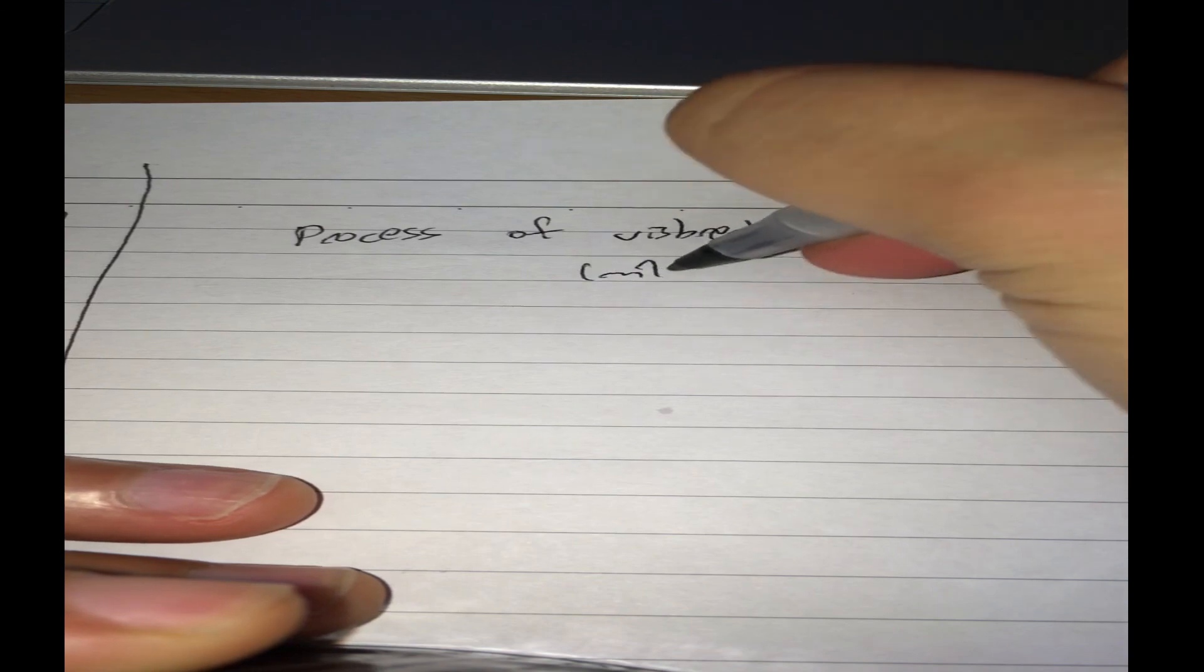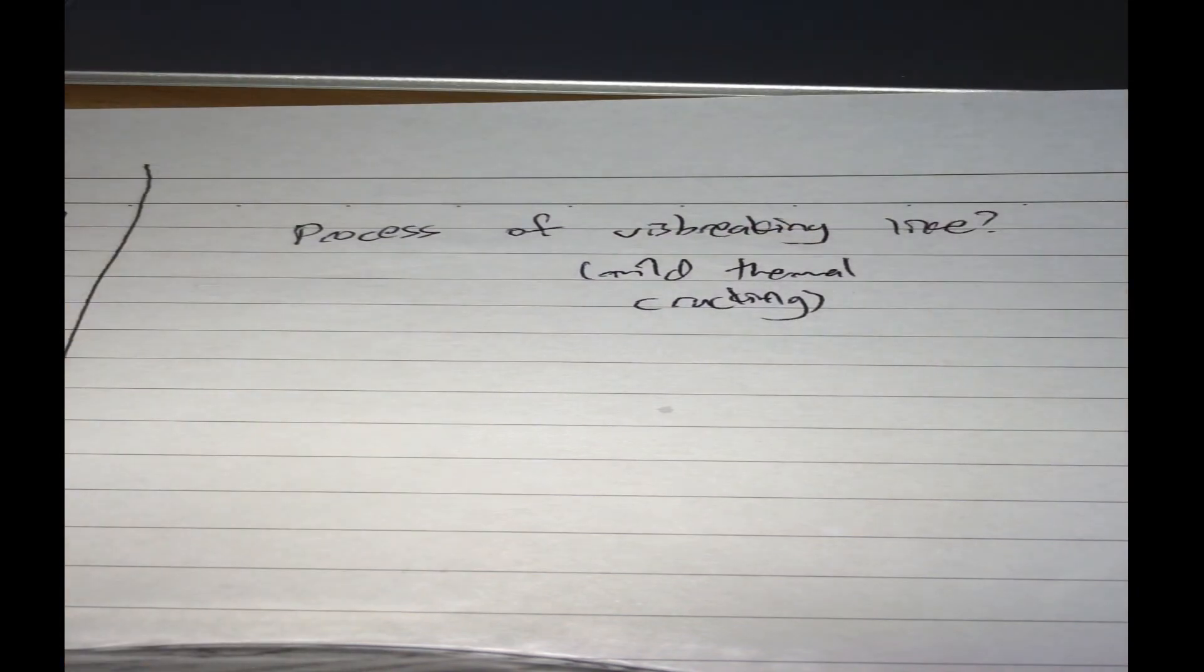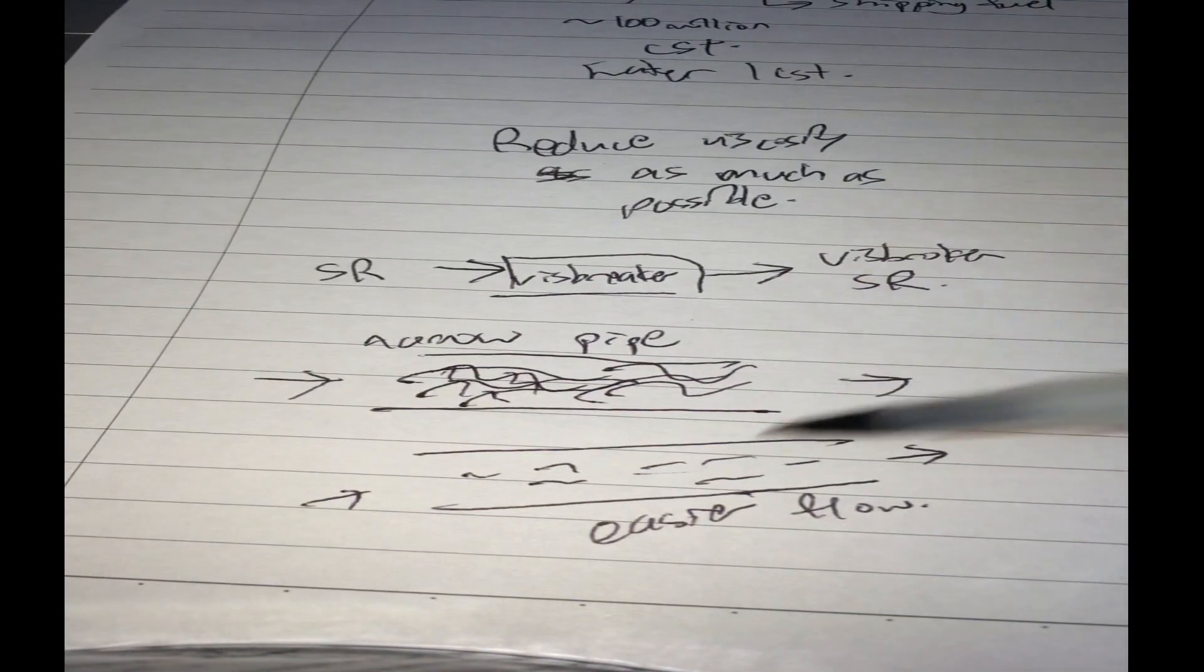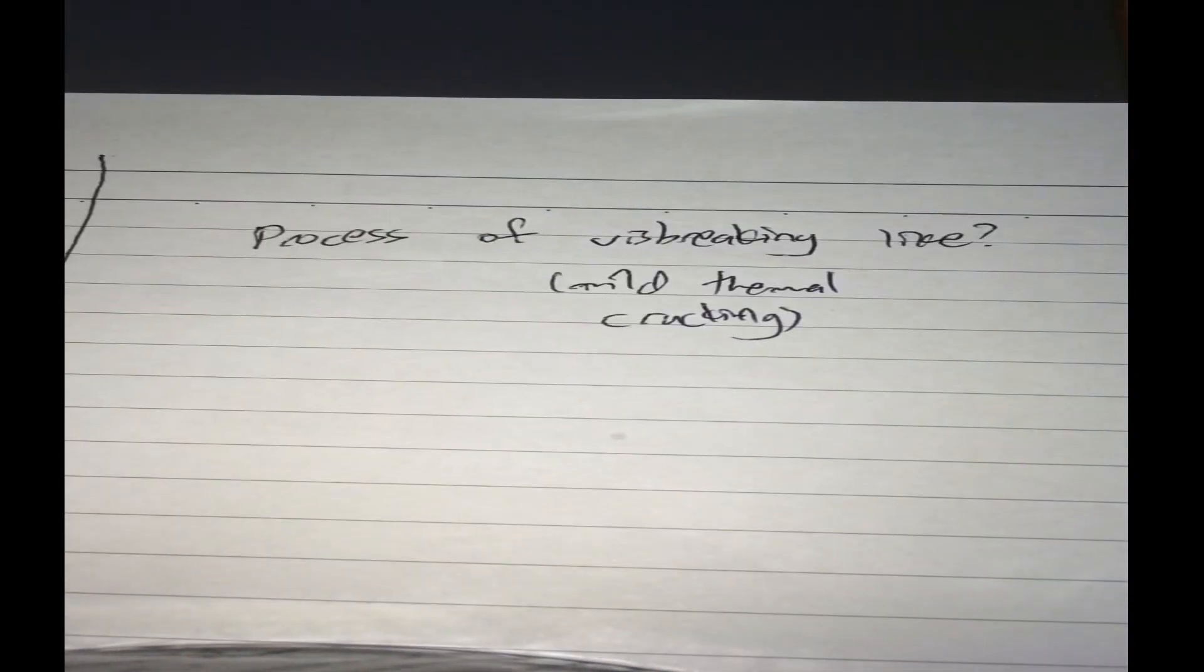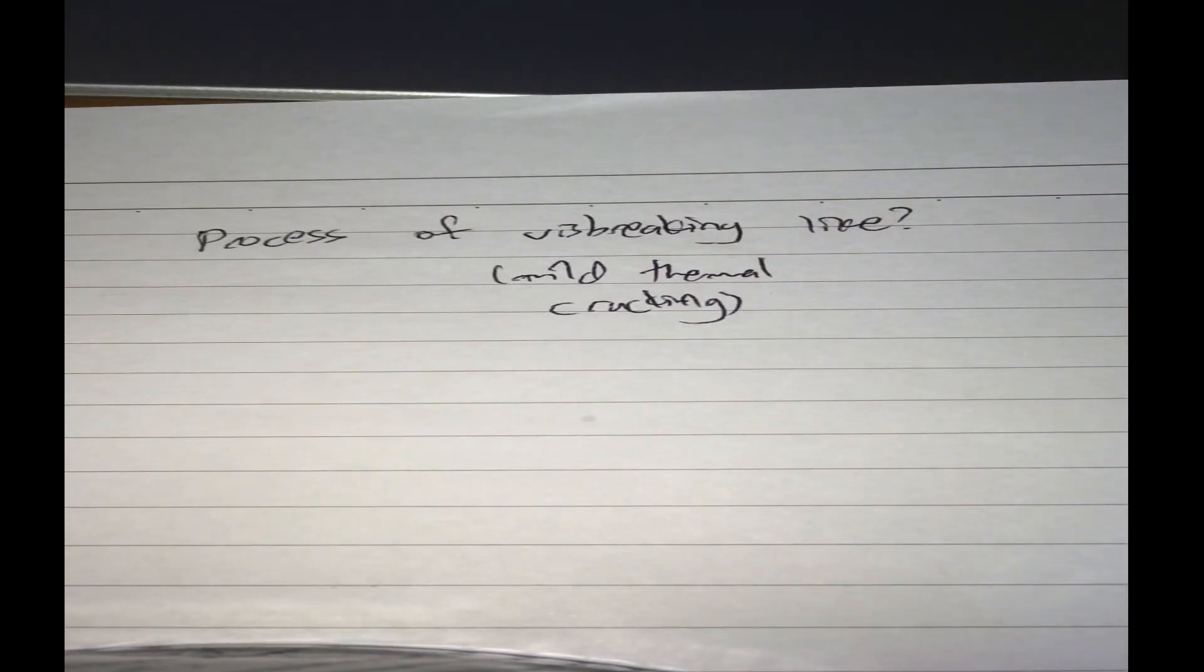And what is the process of visbreaking like? This is a mild thermal cracking process. So what is this breaking like? Just to clarify, what cracking is - cracking is basically taking large molecules and breaking it down to small molecules. That's what I explained just now. So cracking, to crack molecules, is to break it up and make it smaller.